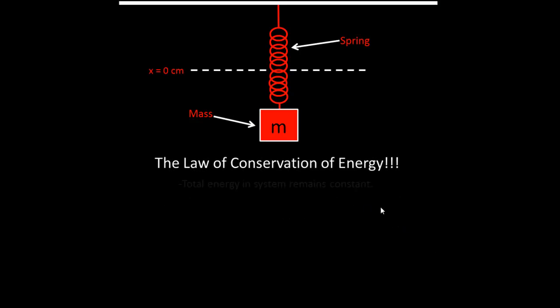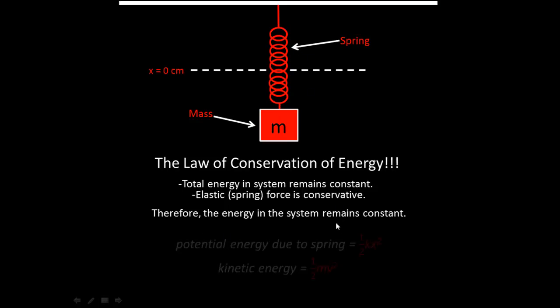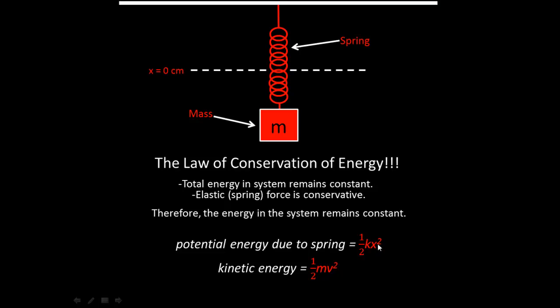The law of conservation of energy states total energy in the system remains constant. Since the elastic spring force is conservative, the total energy stays constant. There are two types of energy: potential energy due to the spring, which is one-half k x squared, and kinetic energy, which is one-half m v squared. We can calculate the total energy using initial conditions and use it to solve for amplitude.